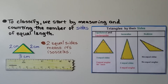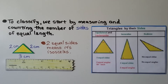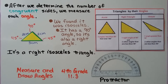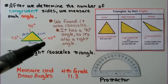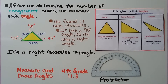To classify, we start by measuring and counting the number of sides of equal length. We can take a ruler and measure each side. We see this is two centimeters and this is two centimeters — it's got two equal sides, so that means it's isosceles. After we determine the number of congruent sides, we measure each angle with a protractor. We find this one is 90 degrees, this one's 45 degrees, and this one's 45 degrees. So it's isosceles, and it has a 90-degree angle, making it a right isosceles triangle.